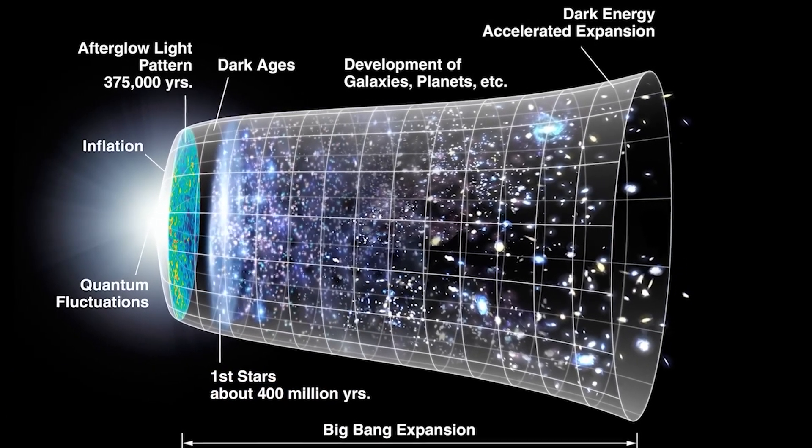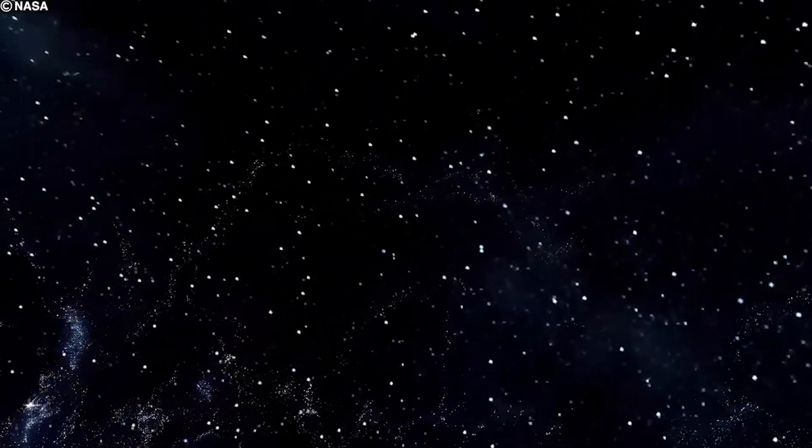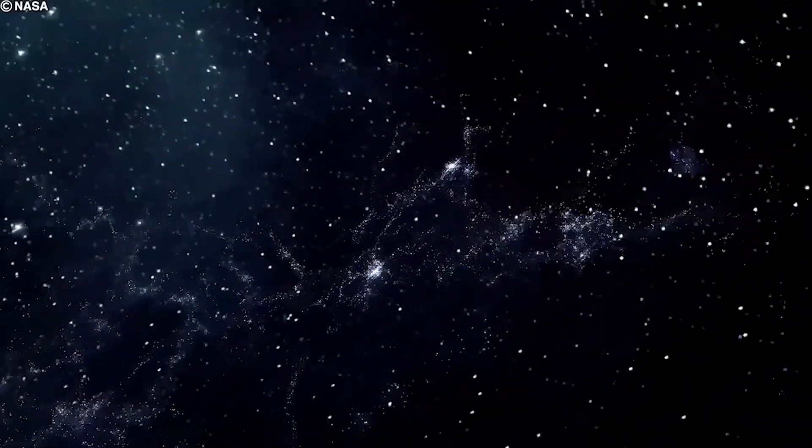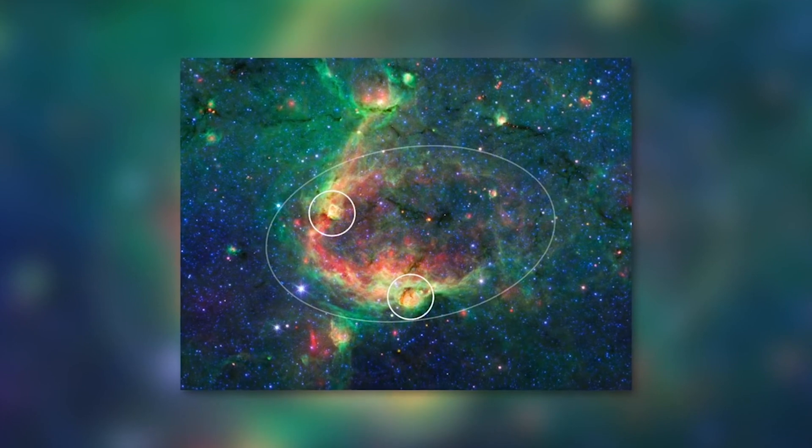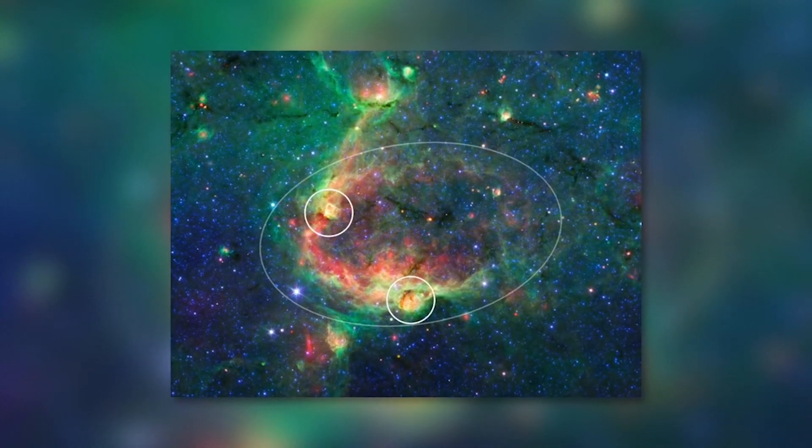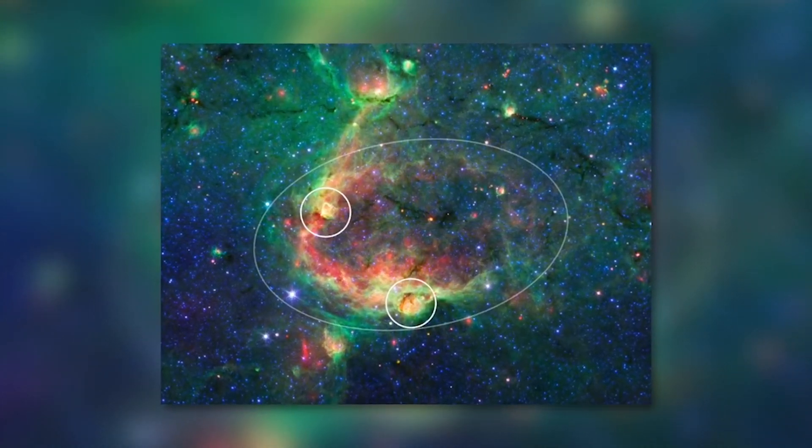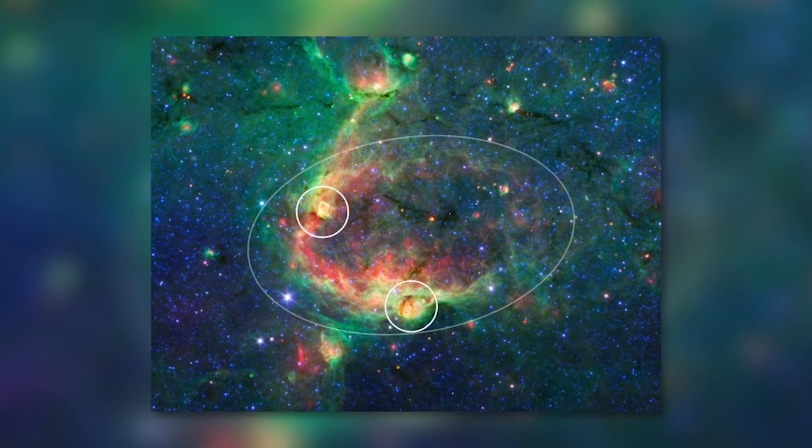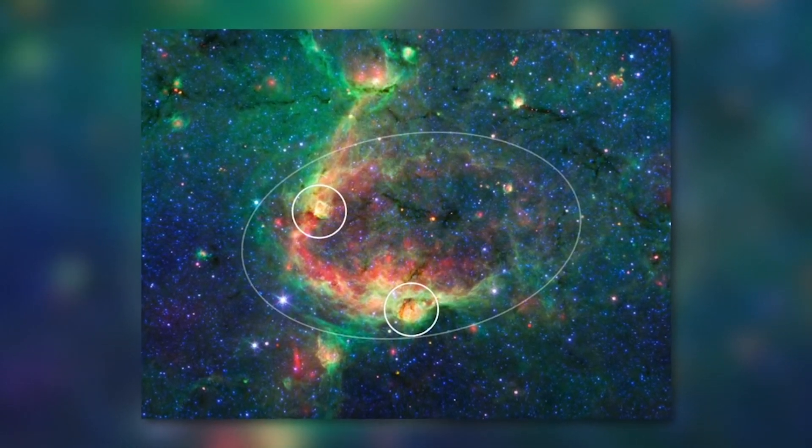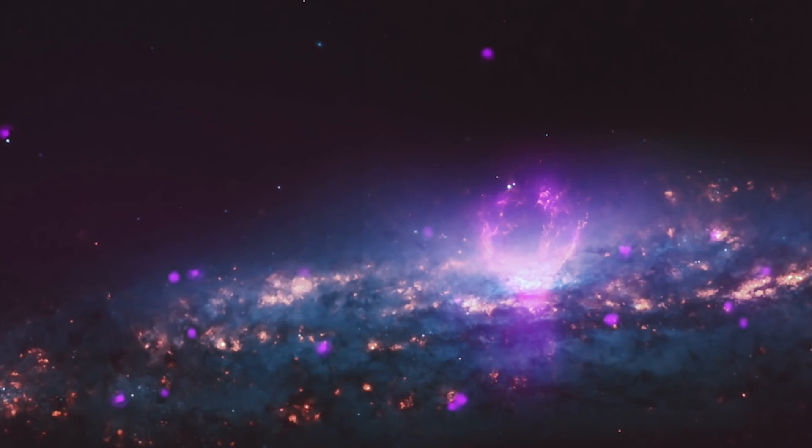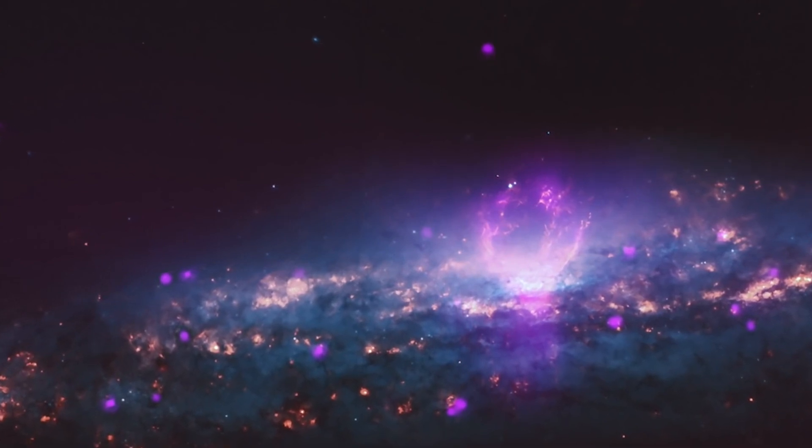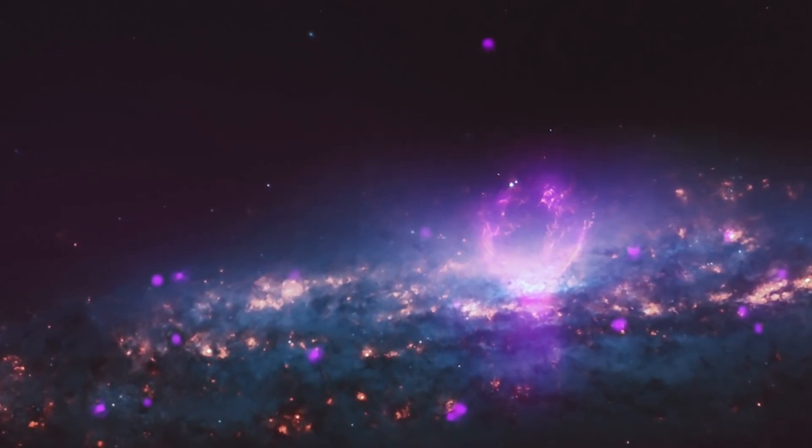According to this scenario, space itself is infinite, and each bubble represents its own infinity, as a single infinity can contain an infinite number of infinities. Even if one could somehow breach the boundary of a particular bubble, the space between these bubbles would continue to expand, preventing access to the next bubble, no matter how fast one moves.